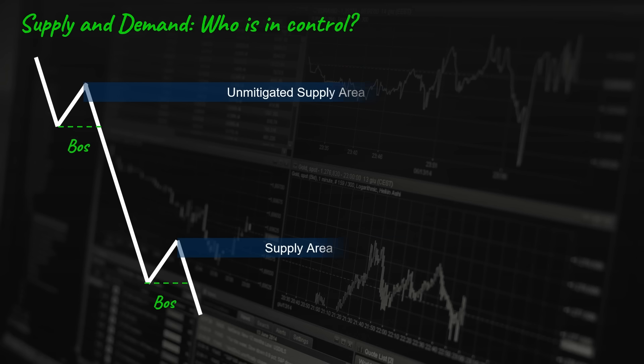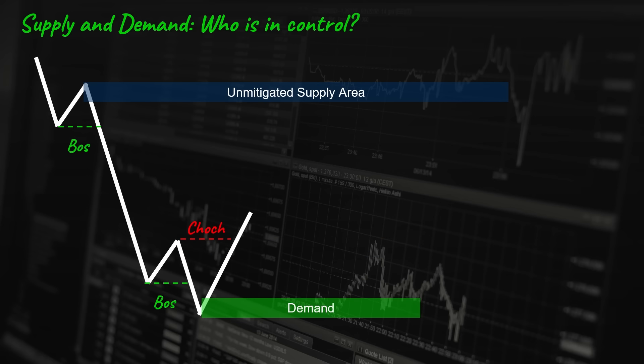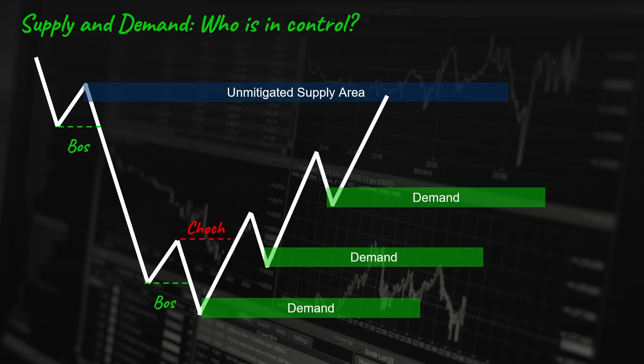Here we have a moving downtrend with a series of bearish, impulsive, and corrective movements. Every time the market makes a structural break, a supply zone automatically forms. This is the latest supply zone in front of the price, and as long as the price trades below it, the supply is in control. But if the price breaks and closes above this area, the demand takes control and a demand zone forms. Now, if the bullish movements continue and we witness breaks of structure to the upside, each demand zone becomes a trading opportunity to go long since our bias is bullish.